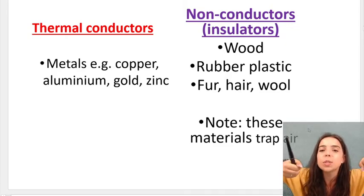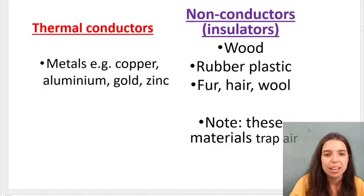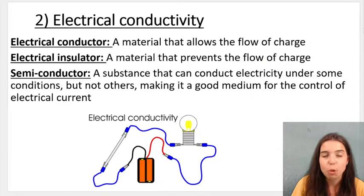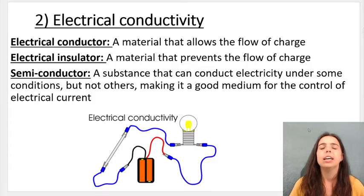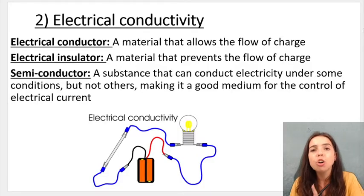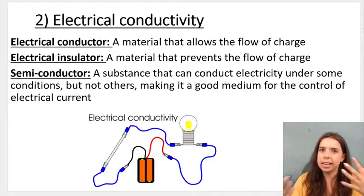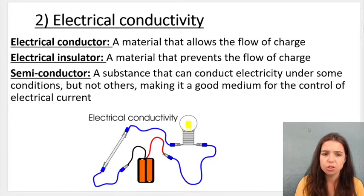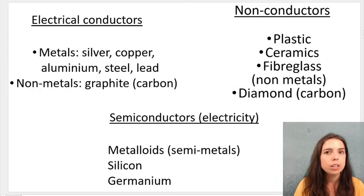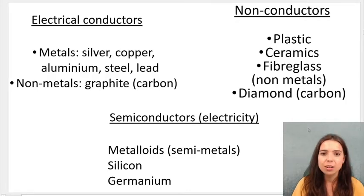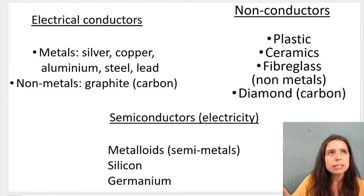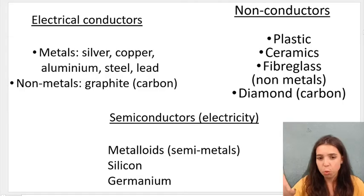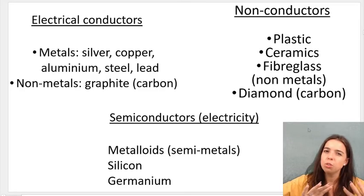Next we have electrical conductivity. Just as thermal conductivity allows the flow of heat, electrical conductivity allows the flow of charge — and we know the flow of charge is electricity. Electrical insulators prevent the flow of charge. We also get semiconductors. Examples of electrical conductors are metals: copper wires are very popular, as well as silver and aluminium. Non-conductors include plastic and ceramics.